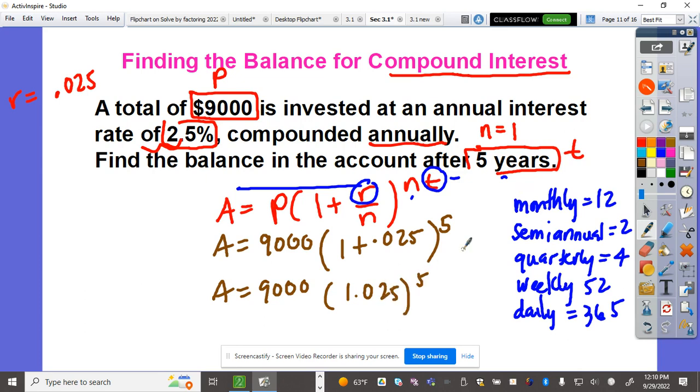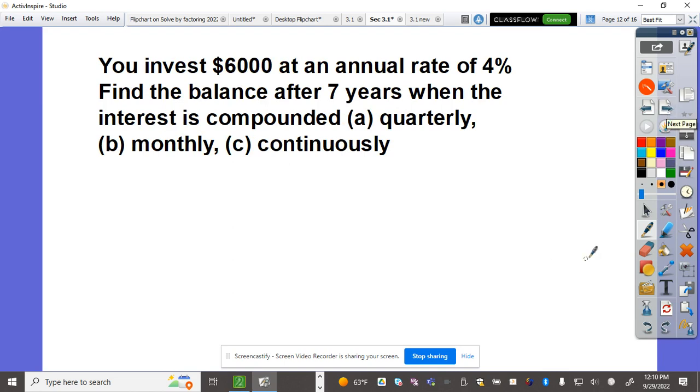Pull up your graphing calculator. 9,000 times 1.025 raised to the fifth power. The value of that investment will be $10,182.67.